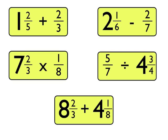Mixed number and fraction calculations look like this. As you can see, you can be adding, subtracting, multiplying or dividing them. You may have a mixed number times by a fraction, or if you look at the bottom example here, you may actually have two mixed numbers together in the same calculation — so eight and two-thirds add four and an eighth. This lesson is about focusing on how we would go about answering these questions.